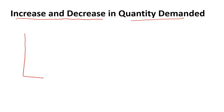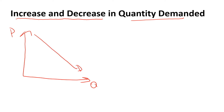How do we represent this on the graph? If I have demand for a certain product, I'm going to emphasize price on the vertical line, quantity is on the horizontal line. Demand is a downward sloping line.